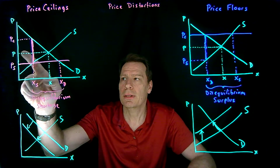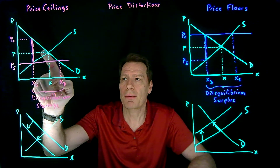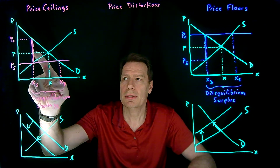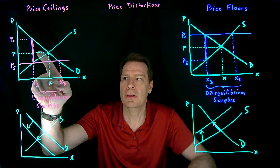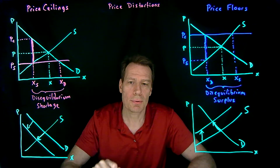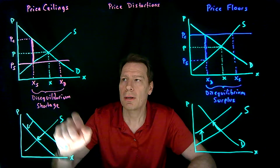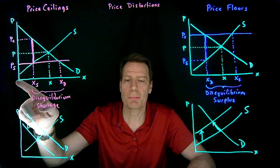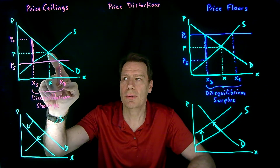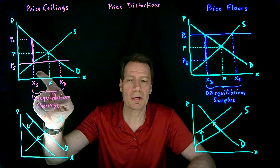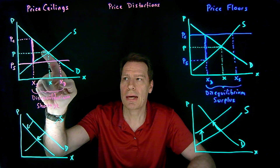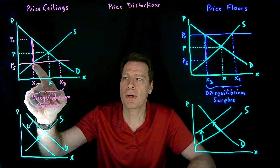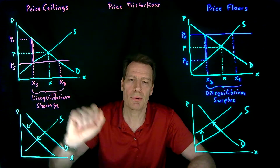Initially consumers had surplus above the price up to the demand curve, including this triangle here — but that triangle is going to go away because those goods aren't being produced anymore. Producers had a surplus below the price down to the supply curve, including this triangle, but those goods aren't being produced anymore, so that triangle goes away too. So we know that in both cases this triangle becomes deadweight loss.